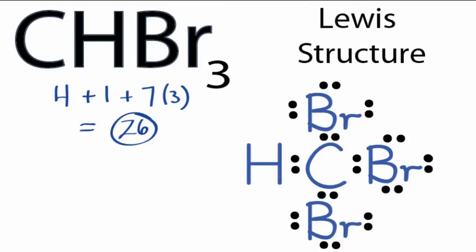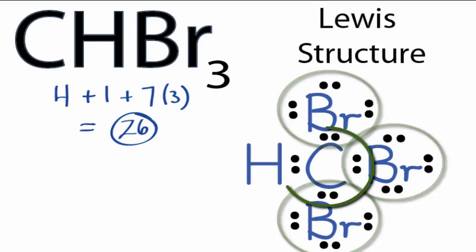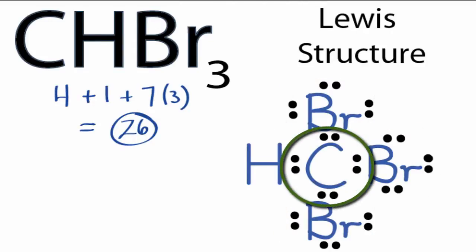So we've used all the valence electrons for the CHBr3 Lewis structure. Hydrogen has 2 valence electrons, so its outer shell is full. Each of the bromines has 8 valence electrons, so we've satisfied the octets of the bromine atoms, and in the center, the carbon atom has 8 valence electrons as well. So that's the Lewis structure for CHBr3.